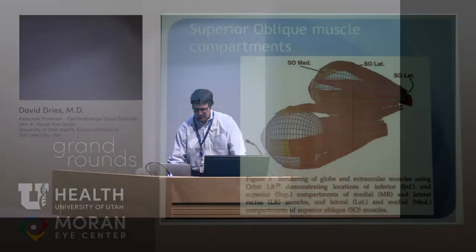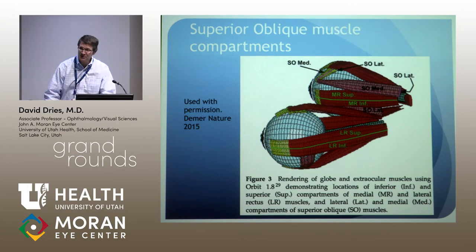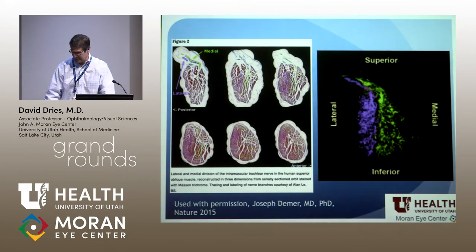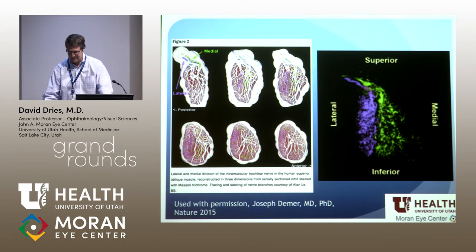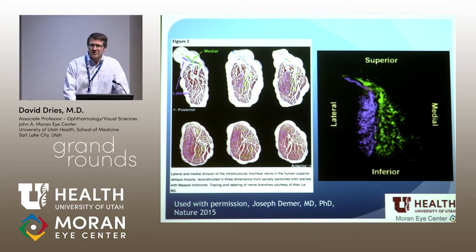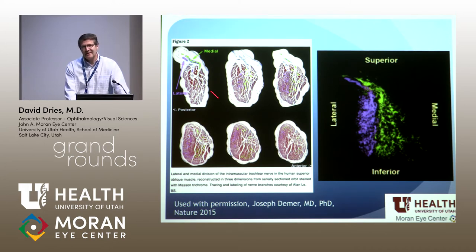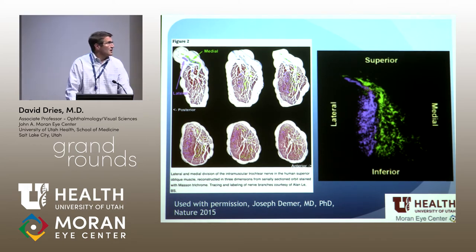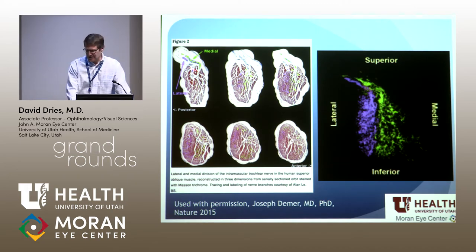Thank you, Bob, and good morning, everyone. This morning, I'm going to present something that will interest you with quite a bit of information fairly quickly. What if I told you that the superior oblique muscle was not just one muscle, but rather two — and indeed, it kind of is. There are muscle compartments in multiple extraocular muscles, and I'd like to talk about the compartments of the superior oblique and what that means clinically for diagnosis and surgical management.